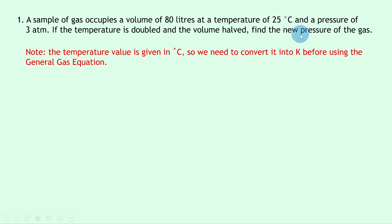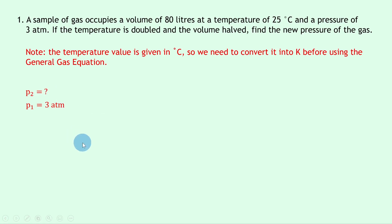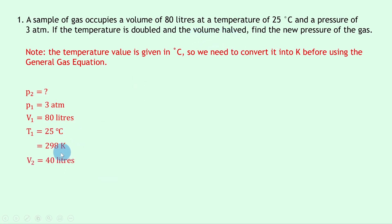Writing down what we know: we're trying to find the new pressure, p2. The initial pressure p1 is 3 atmospheres, which we can leave in atmospheres as long as our final answer is also in atmospheres. The initial volume v1 is 80 litres. The initial temperature t1 is 25 degrees Celsius, which we convert to Kelvin by adding 273, giving 298 K. The volume is halved, so v2 is 40 litres, and the temperature is doubled, giving t2 = 298 × 2 = 596 K.